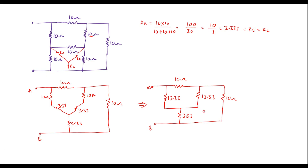Now here we can observe that this 10 ohm, 13.33 ohm, and 13.33 ohm are again in delta fashion. We will try to convert this into star fashion. If we convert this to star, the equivalent star network will appear in this fashion. Let me consider this as Z_A, this as Z_B, and this as Z_C.